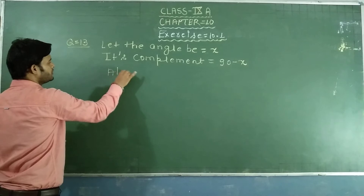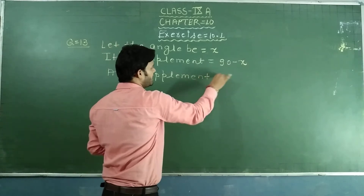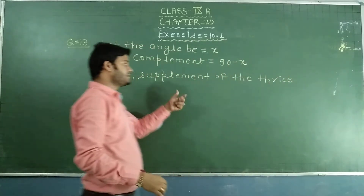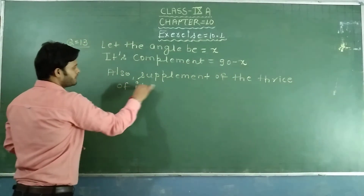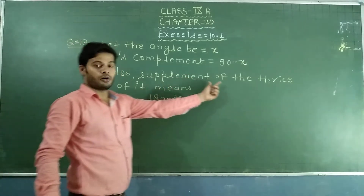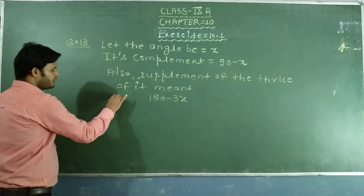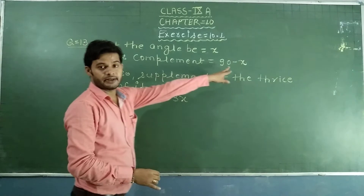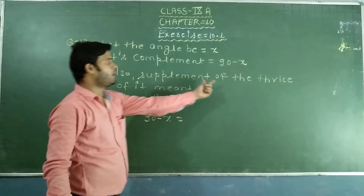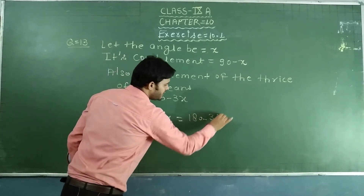Also, supplement of the thrice of it means 180 minus 3x. Supplement of the thrice of it equals 180 minus 3x. Now, according to the question, complement of an angle equals 90 minus x, and 90 minus x equals 180 minus 3x.